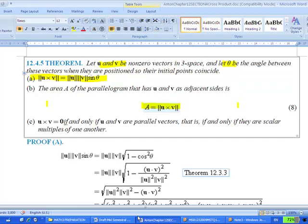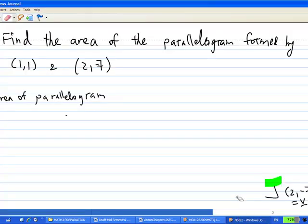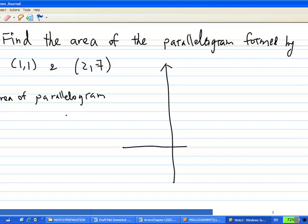So how do I interpret this in the question? We have the area of a parallelogram formed by (1,1) and (2,-7). Let's try to figure out what this parallelogram looks like.